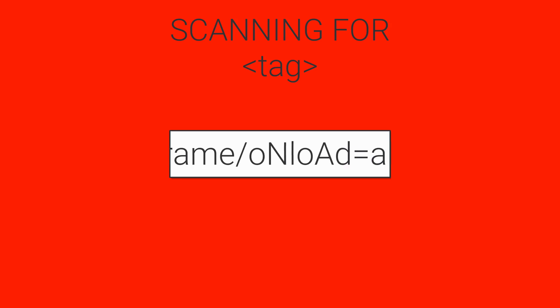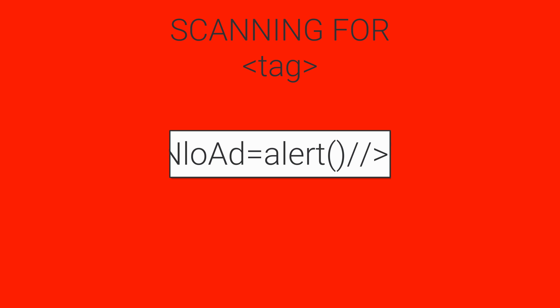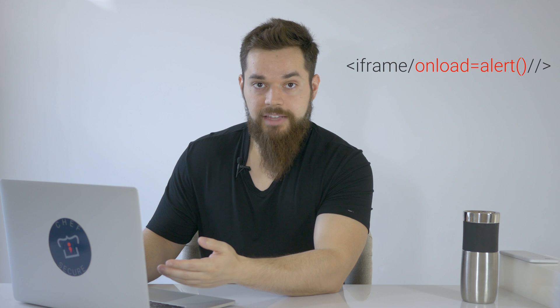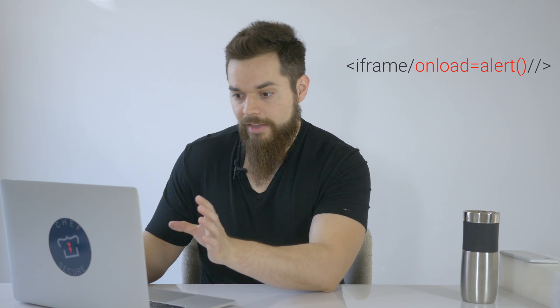Moving on, next we have an event handler — onload equals alert — which you're already familiar with, followed by two slashes that work as JavaScript comments after the alert, then the tag is closed. So overall, you know that the onload event handler is how this attack will work, and everything else isn't really relevant to the execution of this payload, and the browser is automatically going to insert a closing iframe tag.